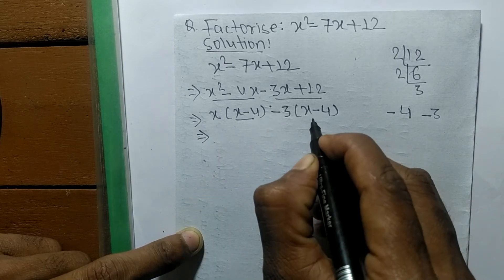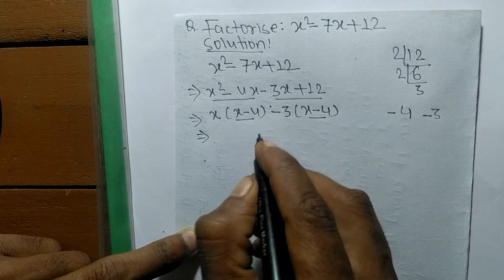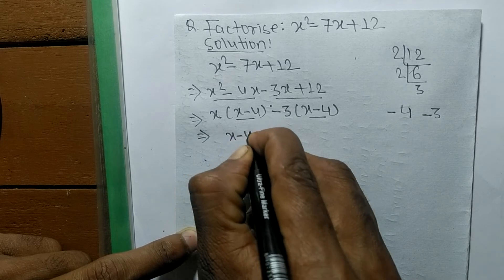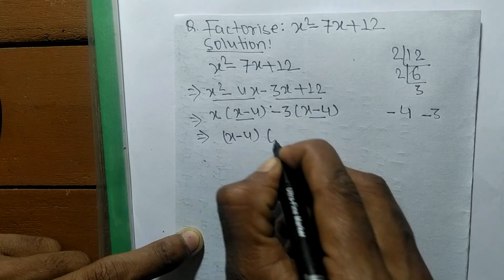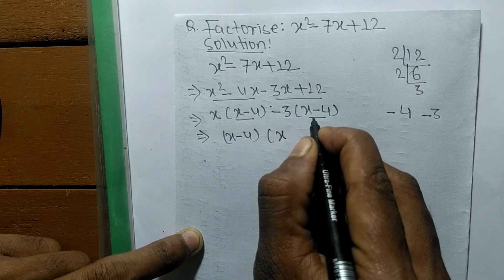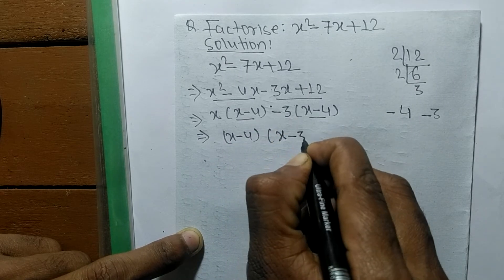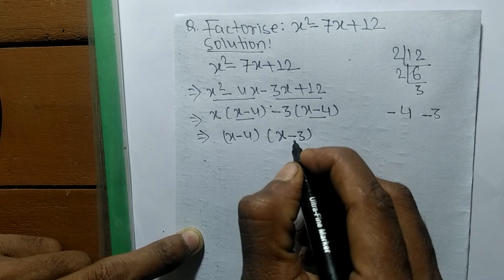As you can see, here is (x - 4) and here is also (x - 4), so (x - 4) is common in both. In the first the remaining is x, and in the second the remaining is -3. So the factors are (x - 4) and (x - 3).